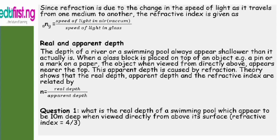We now move to what is known as true and apparent depth. The depth of a river or a swimming pool always appears shallower than it actually is. When a glass block is placed on top of an object, such as a pin or a mark on paper, the object when viewed from directly above appears nearer to the top. The apparent depth is caused by refraction.